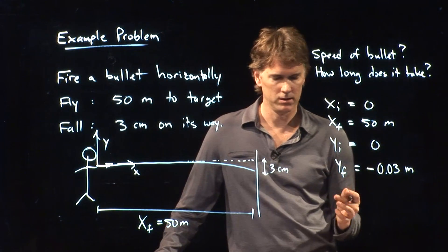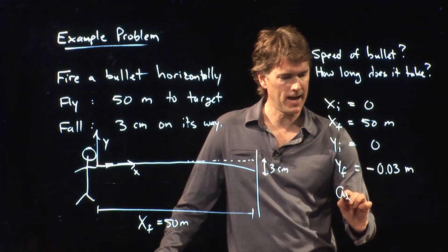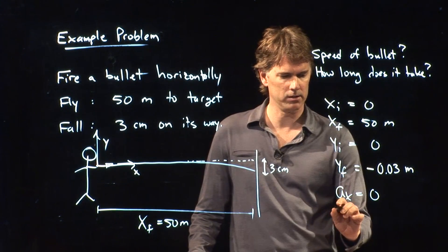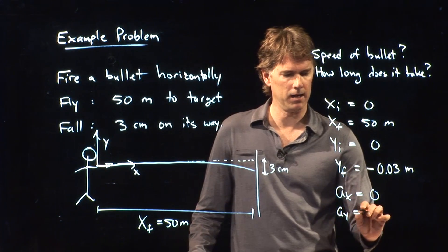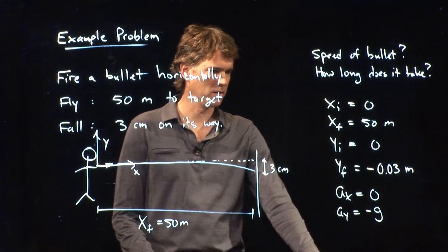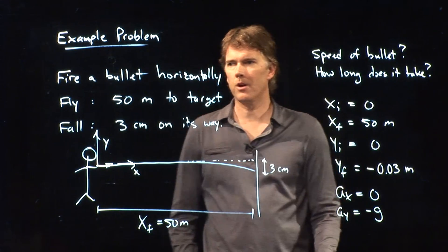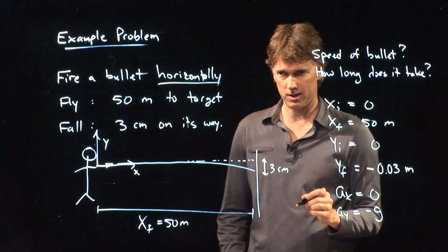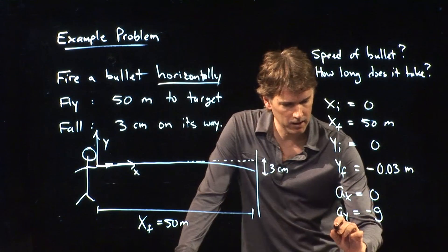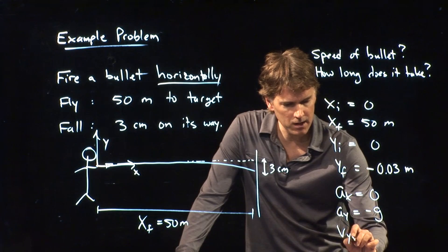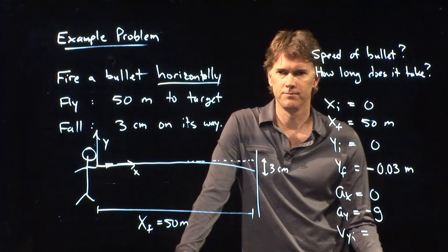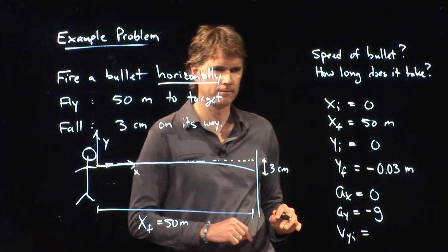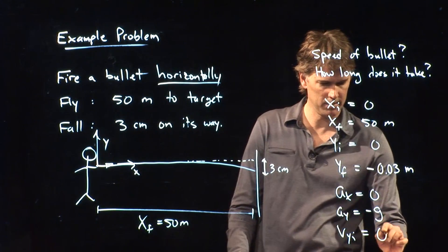What else do we know about the motion of this bullet? Well, it's projectile. So a projectile has 0 acceleration in the x direction, negative 9.8 in the y direction. And we also know something else. Namely, we said that the bullet is fired horizontally. And if it's fired horizontally, what is vy initial? What does vy initial have to be if it's fired perfectly horizontally? Zero. Zero. That's zero.